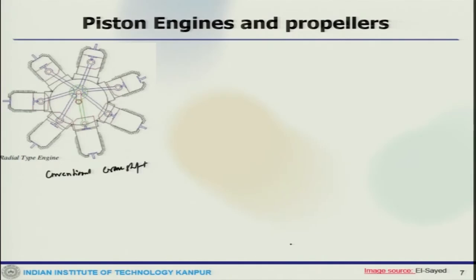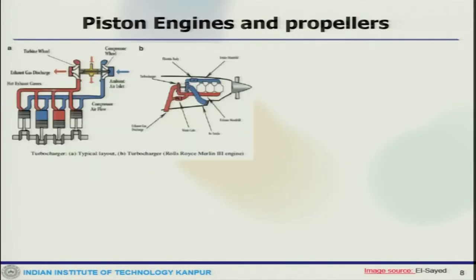Another type is the turbocharger or supercharger kind - this is a Rolls-Royce engine where you can see there is a compressor, then turbine wheel, and how the cylinder arrangement is done. This is a typical layout - these are another category of intermittent combustion engines which are available.